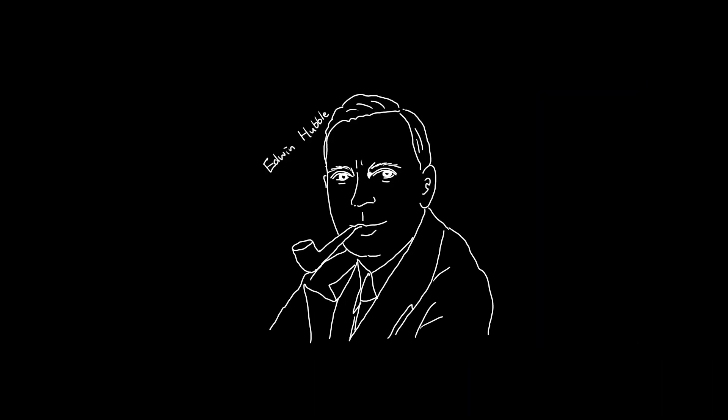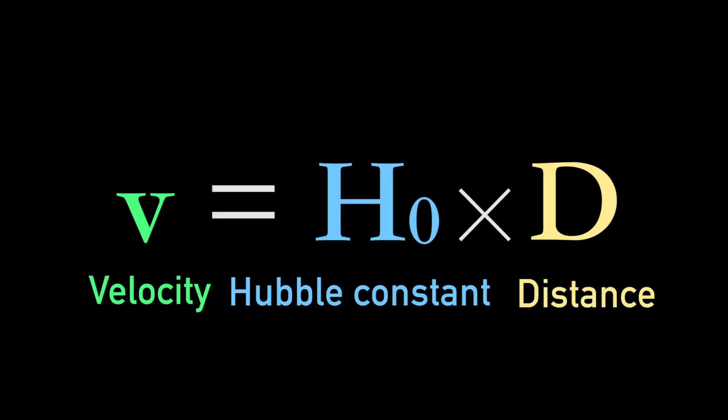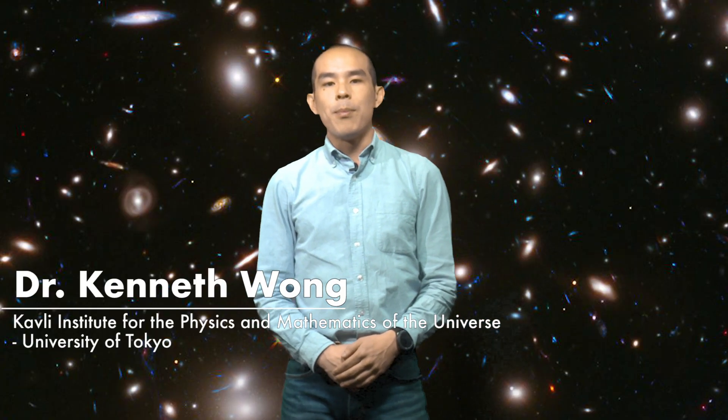Because of Hubble's discovery, we call the rate of the expansion of the universe the Hubble constant, represented by H0. So how do astronomers measure H0? To measure the expansion rate, you need to make measurements of objects in space that are far away from us, so it has to be an object that's very bright in order to be able to observe it. There's a special type of supernova, an exploding star, that we can use to make this measurement.